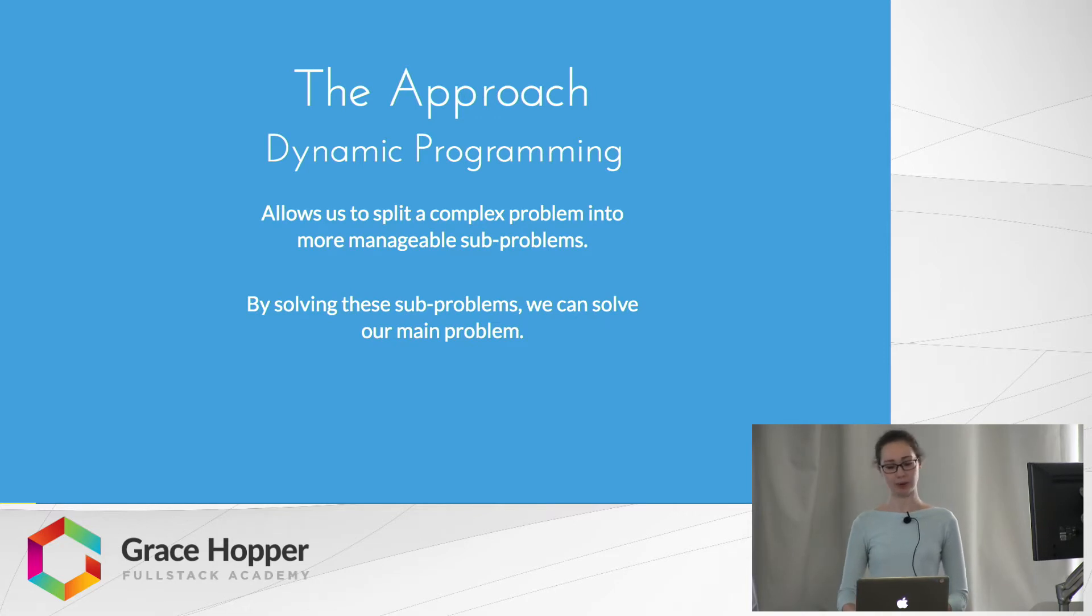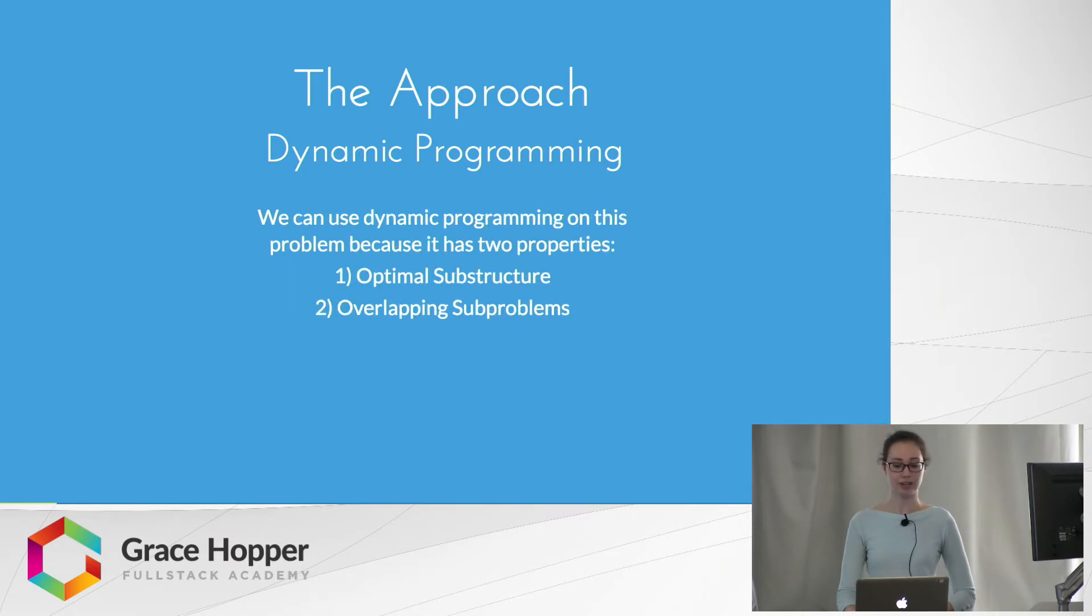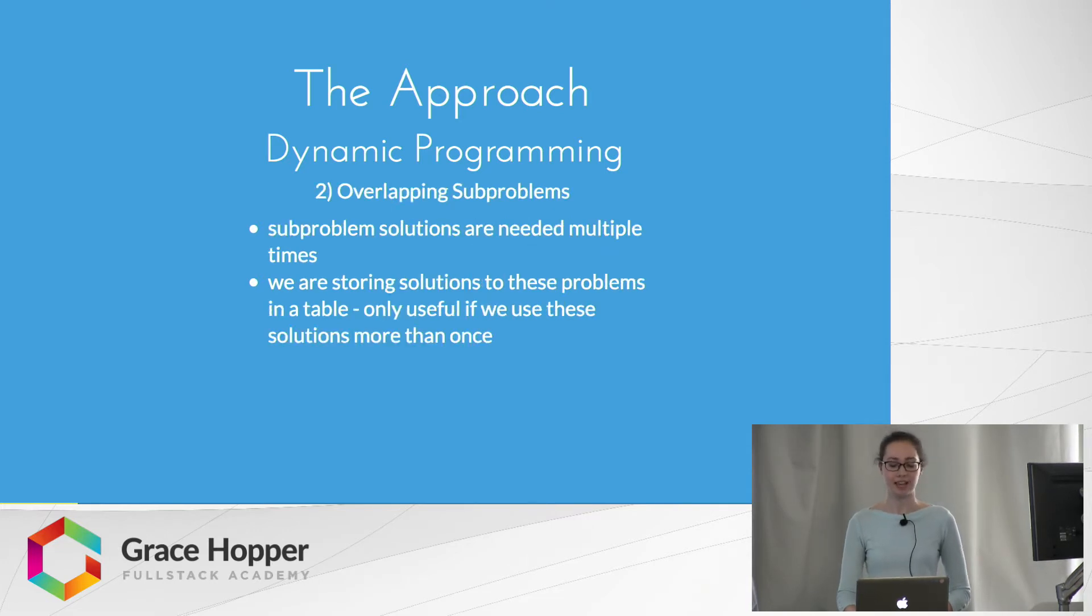The approach we're going to take is dynamic programming. This allows us to split a complex problem into more manageable subproblems, and by solving these subproblems we can solve our main problem. We're specifically going to use tabulation, a bottom-up approach where we build a table and the last entry in that table will be our answer. We can use dynamic programming on this problem because it has two properties: optimal substructure and overlapping subproblems. Optimal substructure means we can get an optimal final solution through optimal solutions of subproblems. Overlapping subproblems means the subproblem solutions are needed multiple times. We're storing the solutions in a table, which is only useful if we use these solutions more than once.